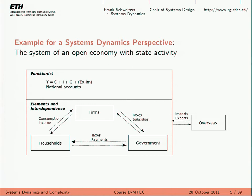Firms pay taxes and get subsidized from the government. Households offer their work to firms, get income, consume products, and also pay taxes to the government. We're not interested in the well-being of the households or firms — we're interested in a macro parameter of the system, in this case GDP: the total amount of goods and services, simply the sum of consumption plus investment plus government expenditure and net exports. This is a systems dynamics model — most of you probably already know this.